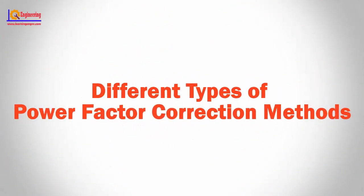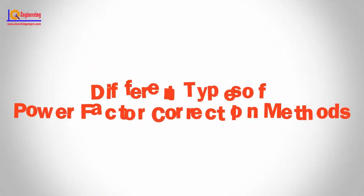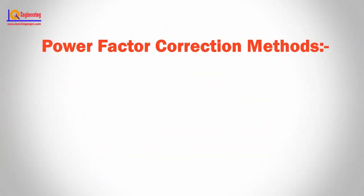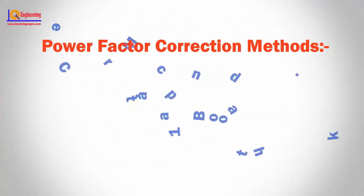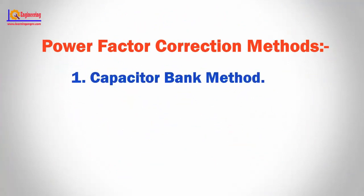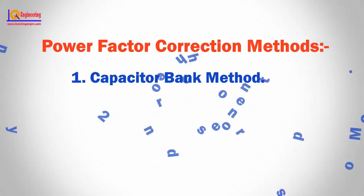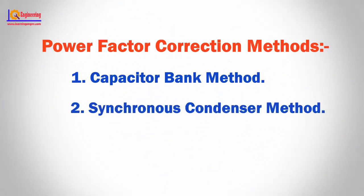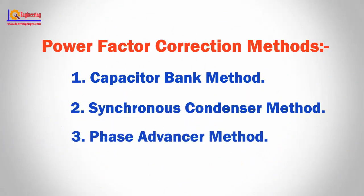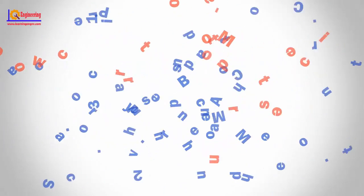In this video we will learn different types of power factor correction methods. The power factor correction methods are mainly classified into three types: 1. Capacitor bank method, 2. Synchronous condenser method, 3. Phase advancer method.